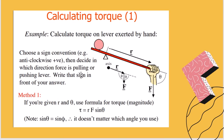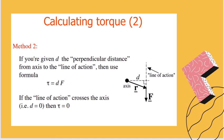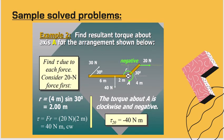Let's have a given solved problem. Find the resultant torque about axis A for the arrangement shown below. Find the torque due to each force — consider the 20 N force first. Based on the given figure, R, the radius, is 4 meters.